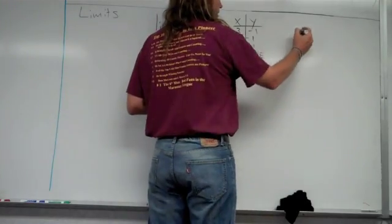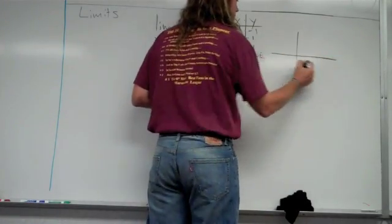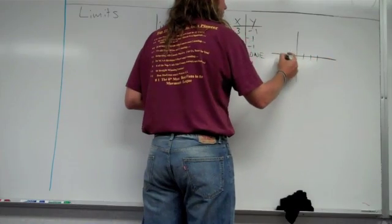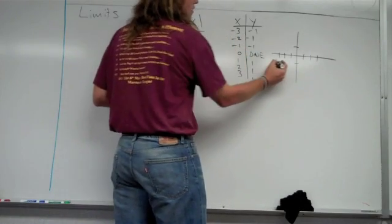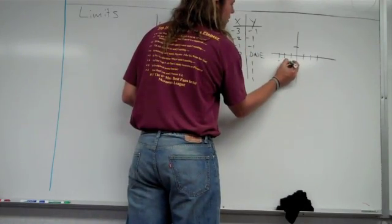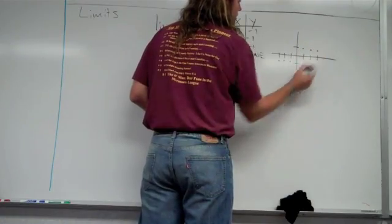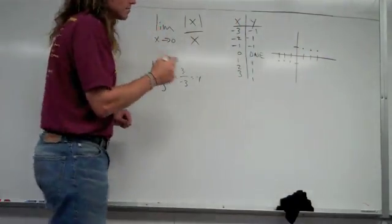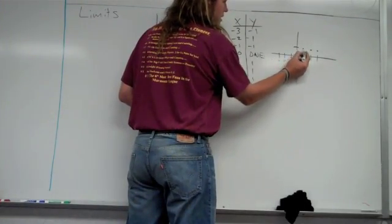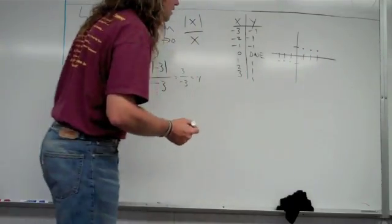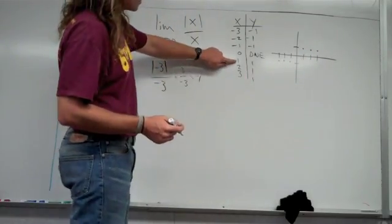So when I plot those on a graph here, I have all these negative values here. I had a point at negative 1 for all of those, all these I had a point at 1. Something I always see in class is my students wanting to just connect the dots, so they'll draw a line out here and just connect this dot to here. But we've got to think...